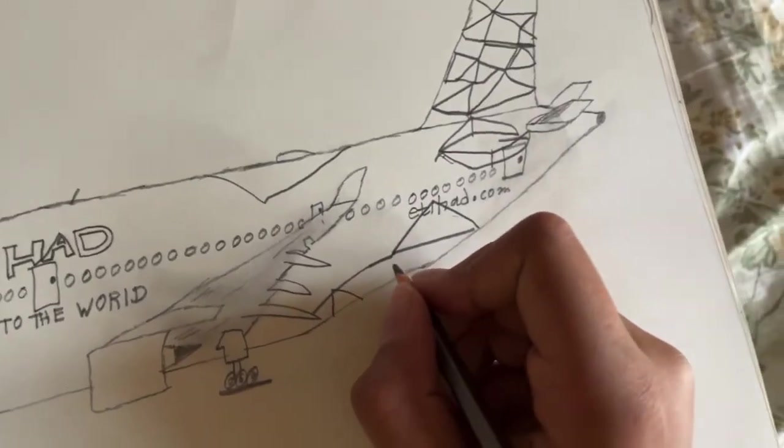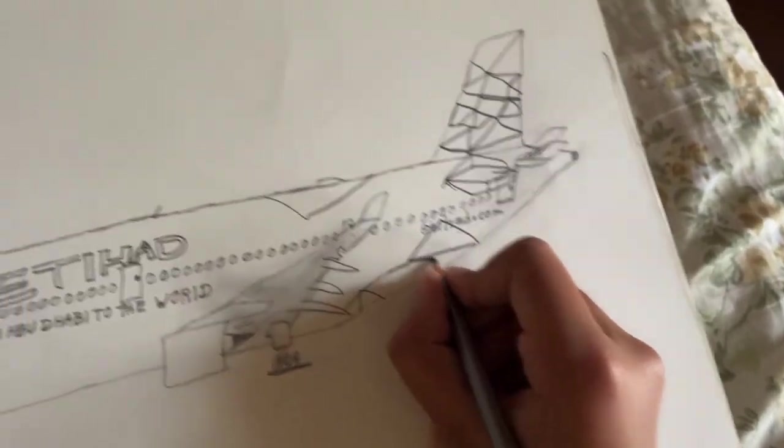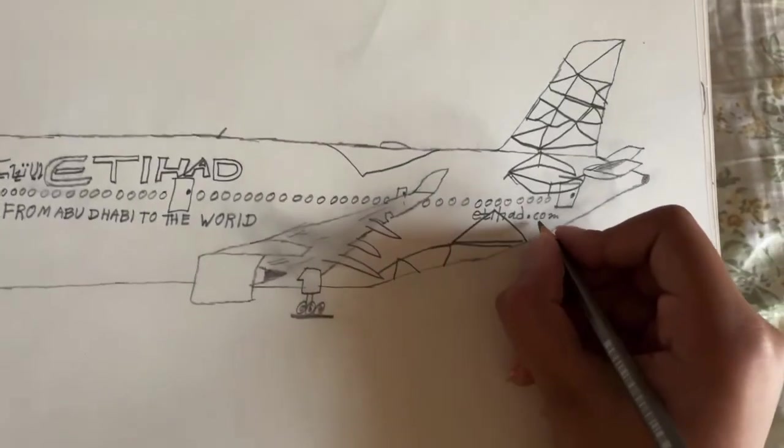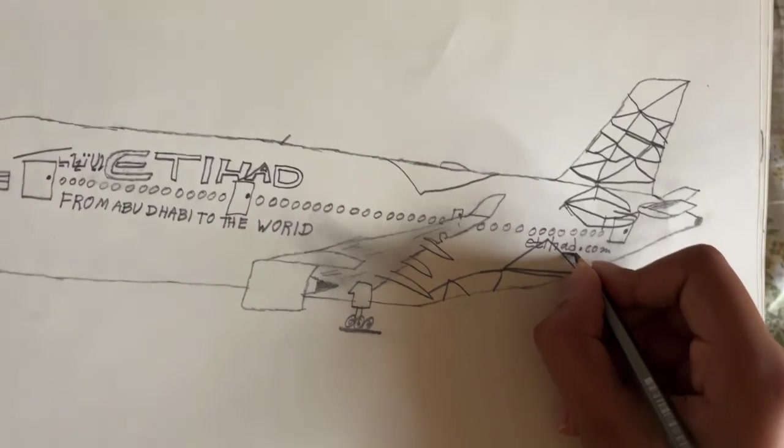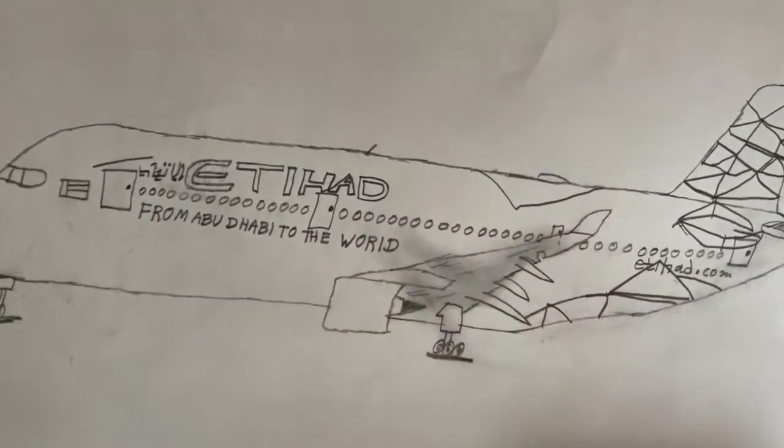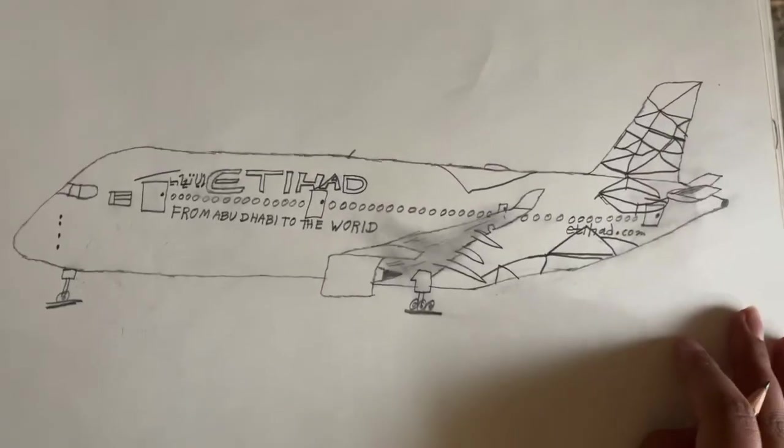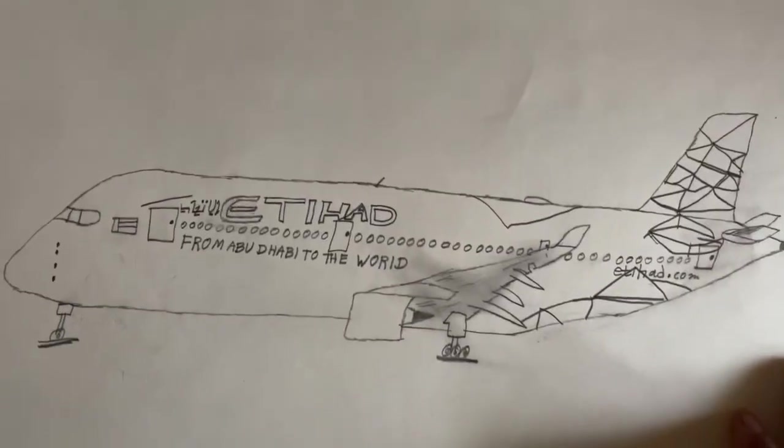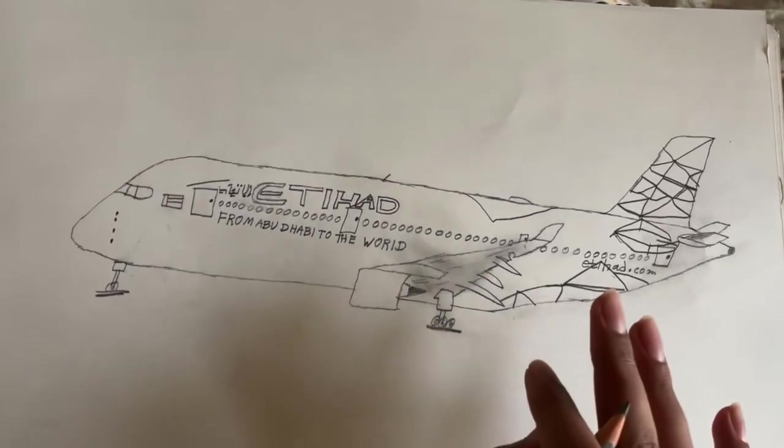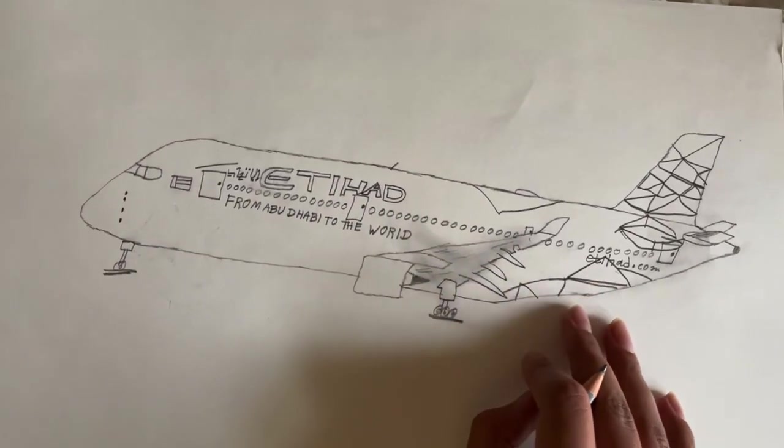These are all triangular designs. Okay, the design is now complete and I thank you very much for watching this video and I hope you enjoyed drawing your very own Etihad Airways A350-1000.